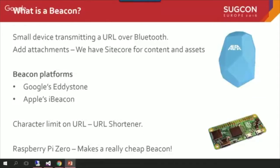Let's start with the Bluetooth beacon. What actually is a Bluetooth beacon? These are small devices capable of transmitting a URL over Bluetooth. It doesn't have to be a limited URL — we can also send other metadata and attachments, but this is a Sitecore talk so we'll be using Sitecore for our content and assets.